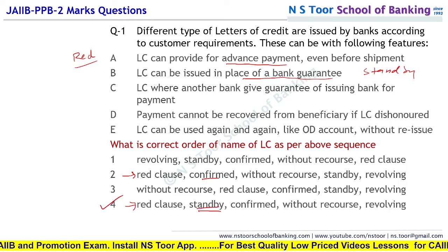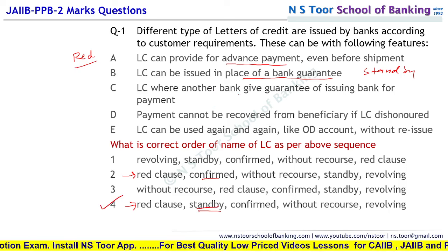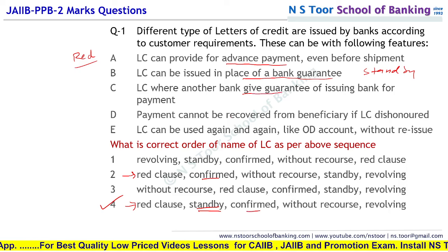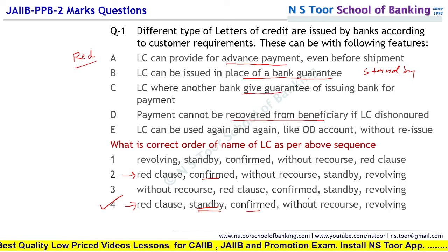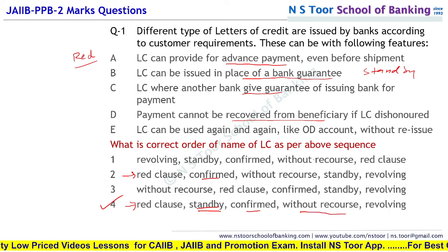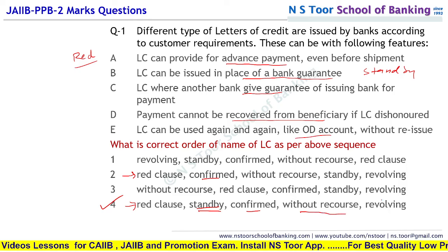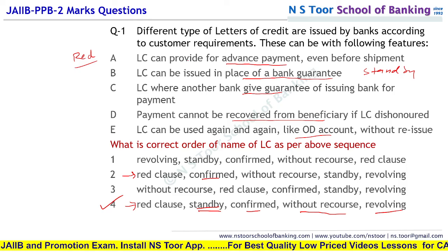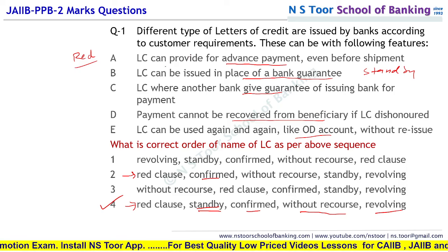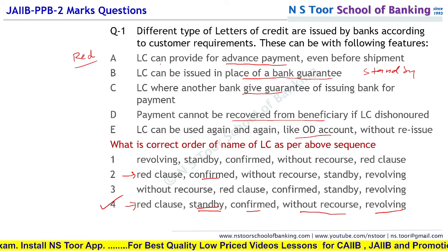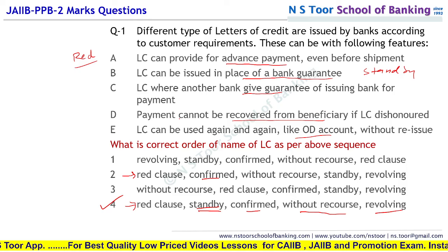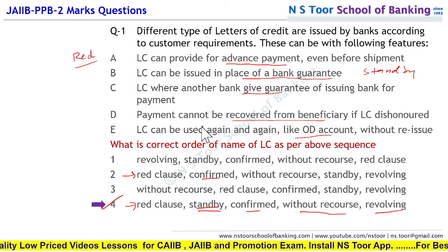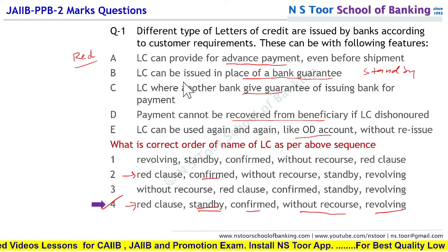Lekin hum chahen to aur option bhi check kar sakte hain. LC where another bank gives the guarantee — usko hum kehte hain Confirmed LC. Payment usse wapas nahi manga ja sakta — wo humara Without Recourse LC. Overdraft ki tarah use kiya jata hai — to humara Revolving LC aa gaya. Paper ke andar agar aapne smart way mein option choose kiya to is question ko hum kaafi easily aur quickly handle kar sakte hain. To humara answer number 4 already decide ho chuka hai.